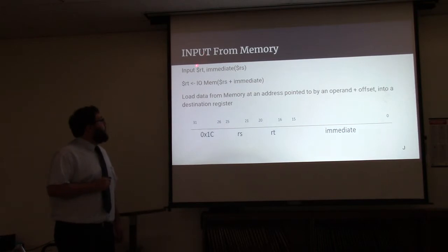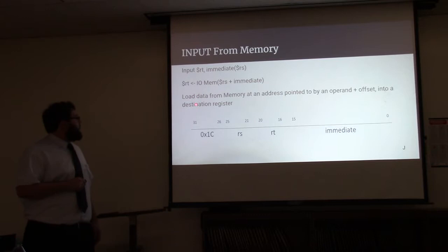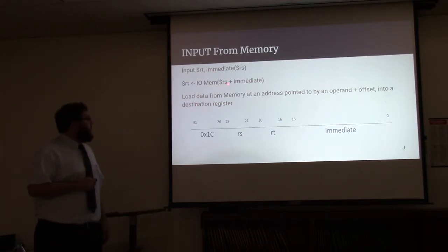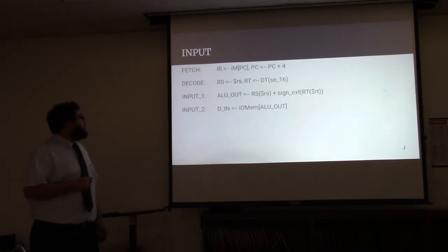To access the I/O memory, we have the input command which loads data from memory at an address pointed to by an operand and its offset and it loads it into a destination register. This is done with four main states with fetch and decode, as we mentioned, and input, which takes the effective address calculations and puts it into ALU out. This is then used to index data memory, which is shoved into the data memory and then it's written back into the register file.